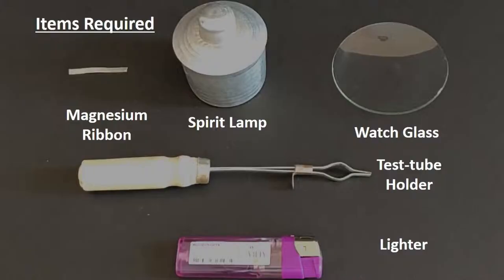For this we need a 1 inch piece of magnesium ribbon or strip, a spirit lamp, a test tube holder, and a lighter or matchstick to light the spirit lamp.